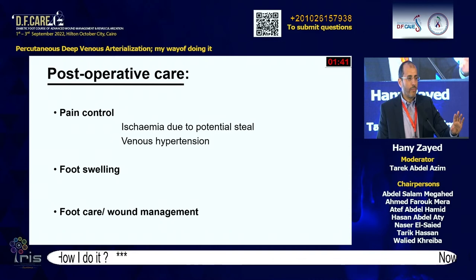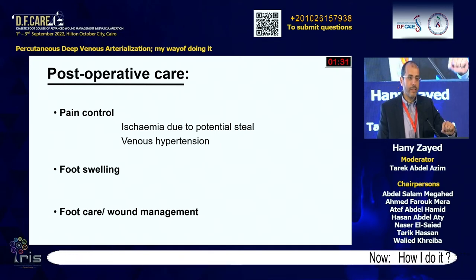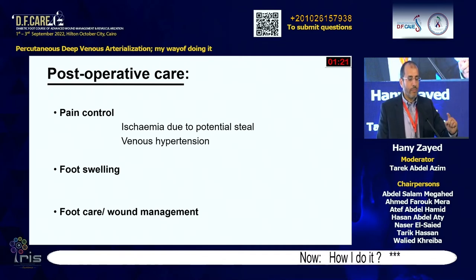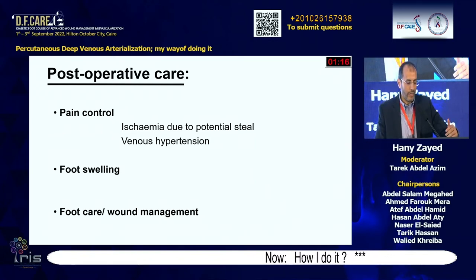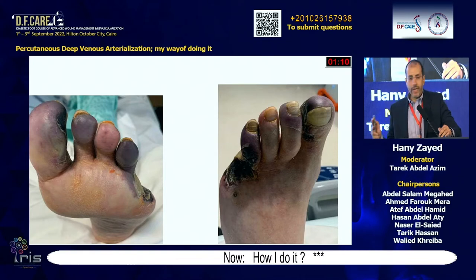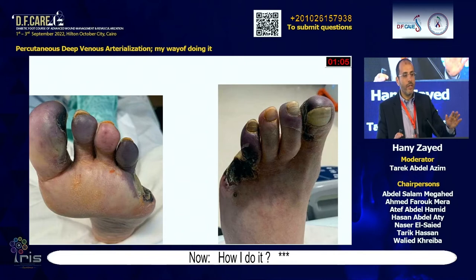Standard analgesia doesn't work because of the severity of pain. Now every patient leaves theater with a sciatic nerve sheath in place for seven days with continuous infusion — the only way patients can keep the leg elevated, which also helps reduce edema. For foot care: sometimes you start with one gangrenous toe and, having changed all the hemodynamics, you may get even more ischemic appearance of the remaining toes.